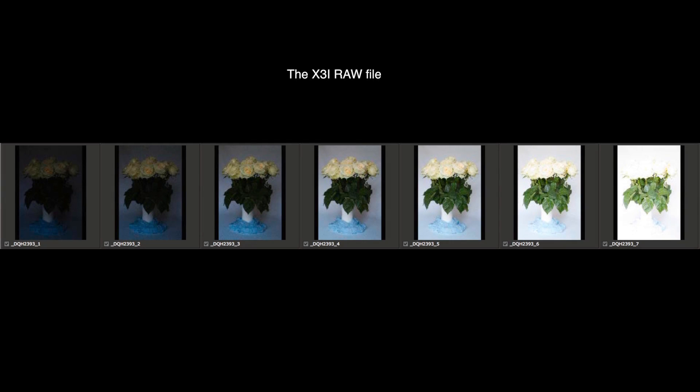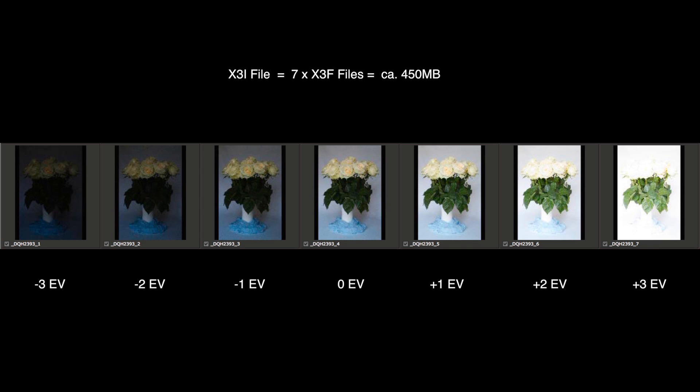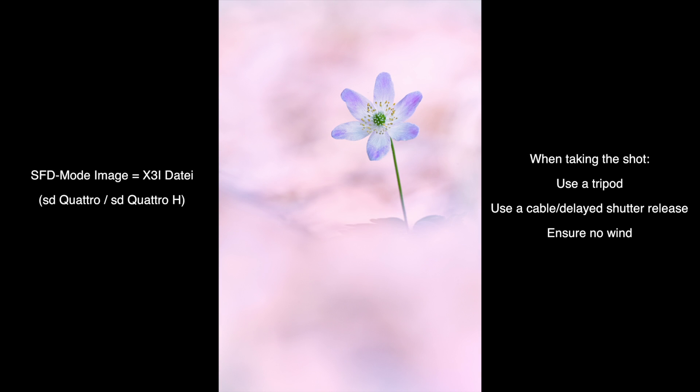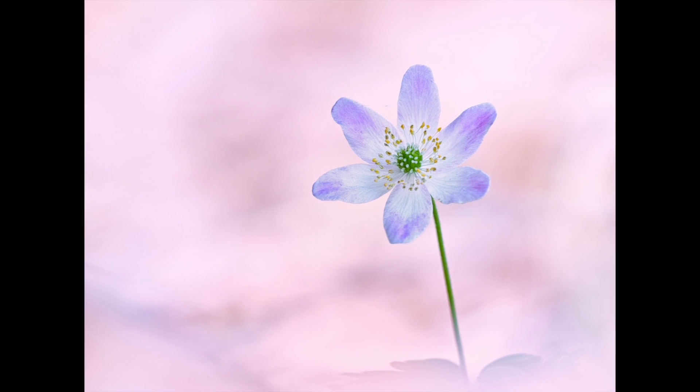In SFD mode, the camera produces an X3i file by taking 7 pictures which will be combined automatically in SPP. The 7 images will be taken automatically at ISO 100 so that the images differ only in their exposure time, that is from minus 3 to plus 3 EV. The 7 images are combined in SPP into a single TIFF file. The processing of an X3i file is however not intuitive and, because of the way differently exposed images respond differently to tonal adjustments and colour corrections, this can very easily result in an image which is far from perfect.